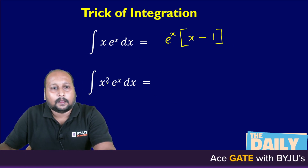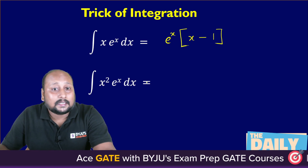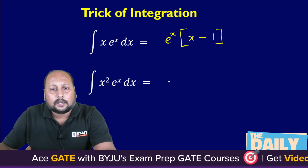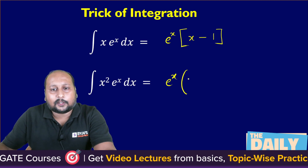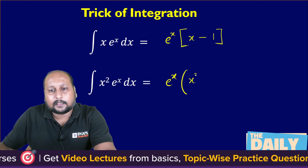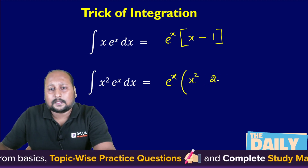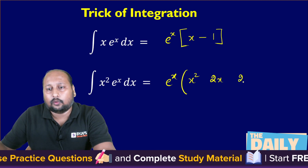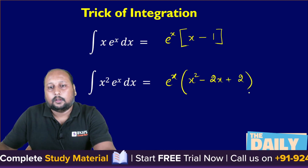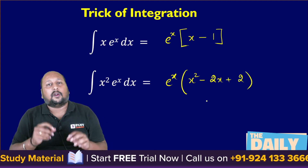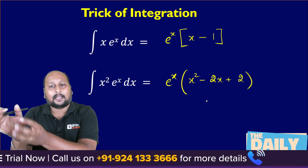Let us try one more time. If I want to integrate x²·eˣ dx: write eˣ as it is, draw the bracket, write x² as it is. The differentiation of x² is 2x, and the differentiation of 2x is 2. Write the opposite signs — minus, plus. So the integration of x²·eˣ dx is eˣ(x² − 2x + 2).